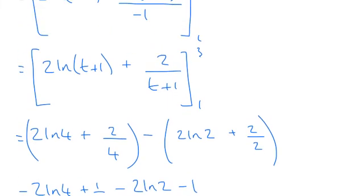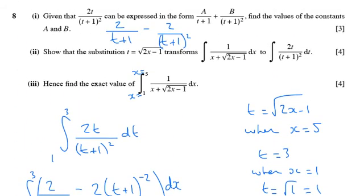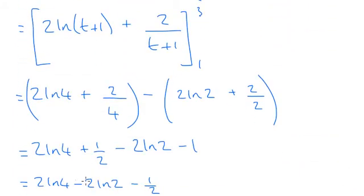The question just asked for an exact value, so this would be sufficient. However, you could turn this into a single log. Since both terms have a 2 outside, that would be 2 times the natural log of 4 over 2, minus a half, which is 2 ln 2 minus a half.